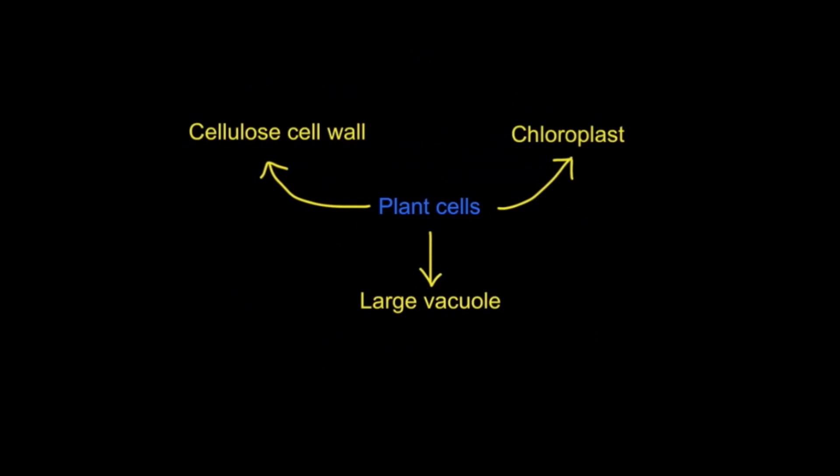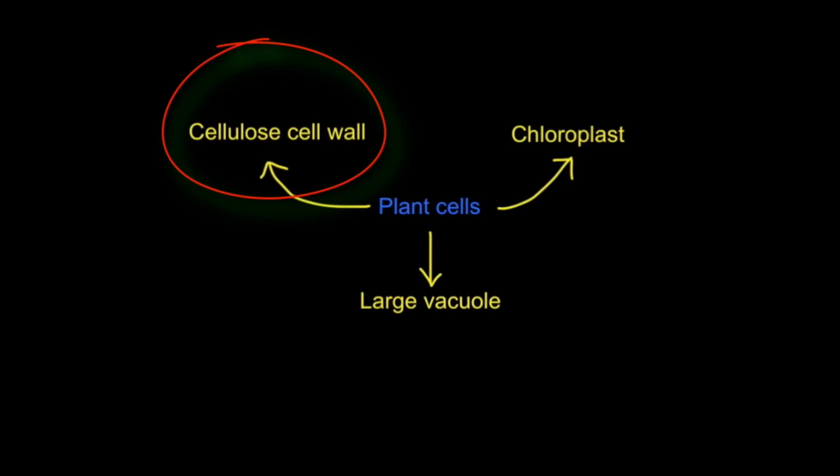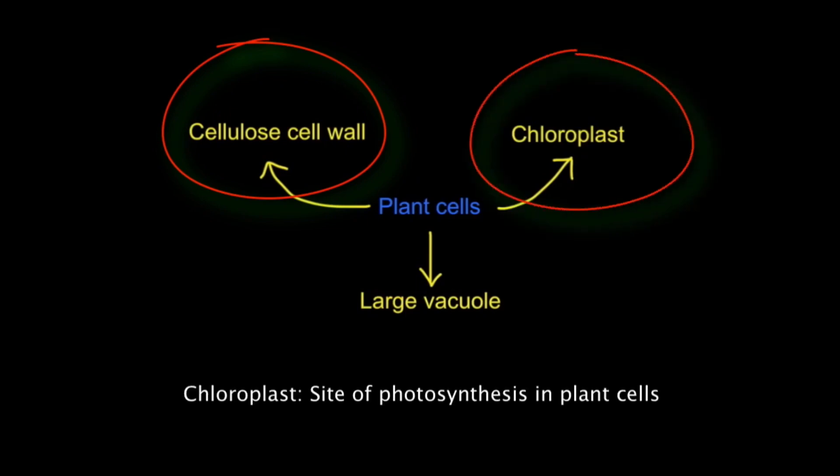In a plant cell, we would additionally see a cell wall made of cellulose and chloroplasts, which are membrane-bound organelles and the site of photosynthesis. These features are unique to plant cells.